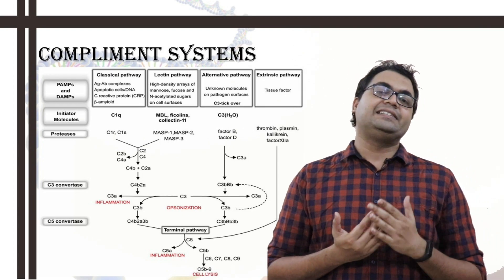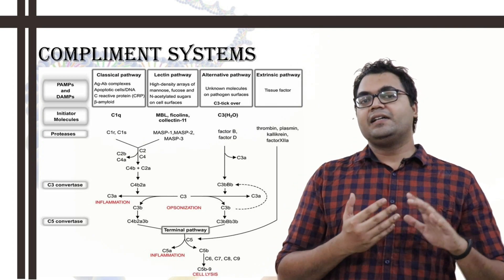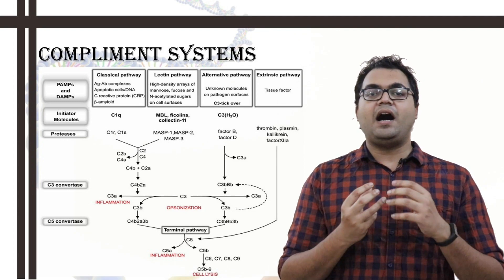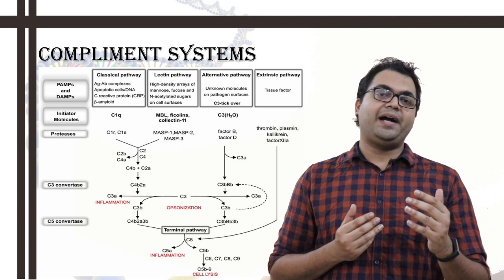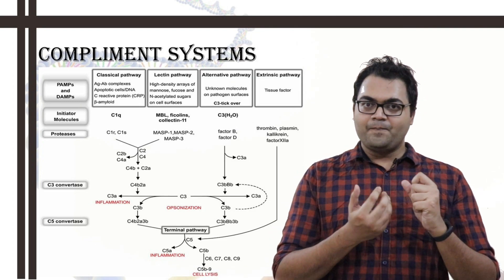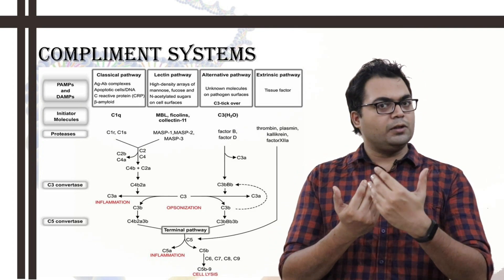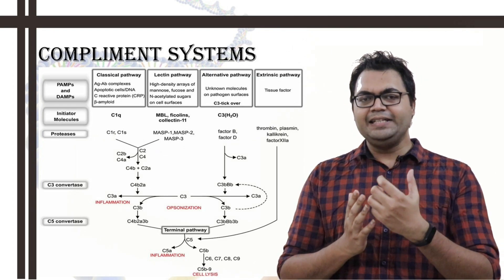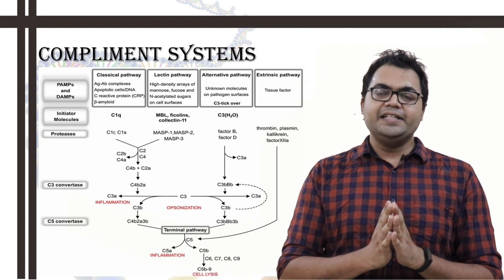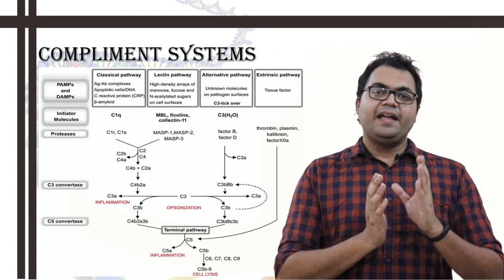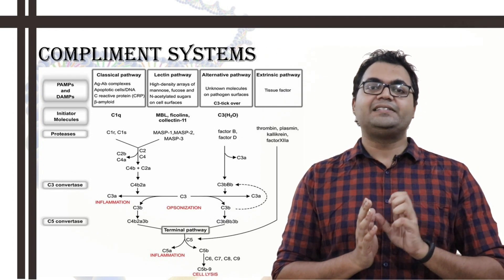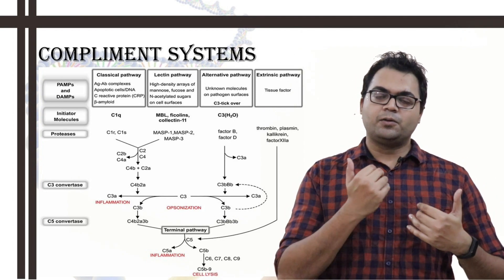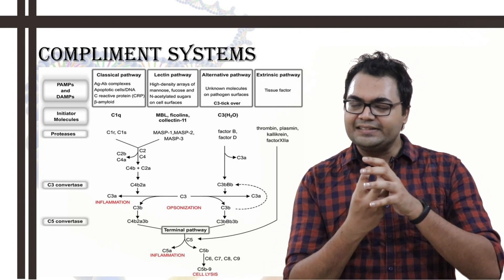Now, after the C1s is activated, what happens is specific substrates for that C1s serine protease are C2 and C4. Now, C2 comes and binds to the complex, and C4 also comes and binds to the complex. Now, C4 is cleaved via the C1s serine protease into C4a and C4b. The C4a is the smaller fragment, which ultimately is washed off, goes away from the circulation. C4b remains attached.